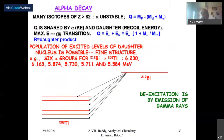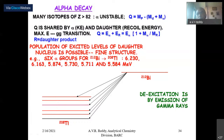Today's lecture will start with the alpha decay process. In alpha decay, an unstable nucleus emits an alpha particle. An alpha particle consists of two neutrons and two protons — it is the nuclear part, equivalent to a helium nucleus. When a nucleus emits an alpha particle, the mass number changes by four units and the charge is reduced by two units.